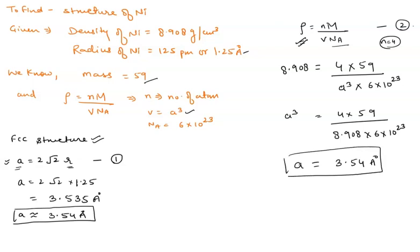So now we can see here that in both these situations, the value of this A is equal to 3.54 Angstrom. So in that case, we can say that this is a FCC structure of metallic nickel.